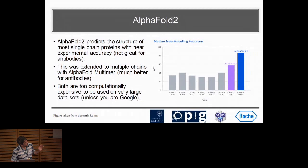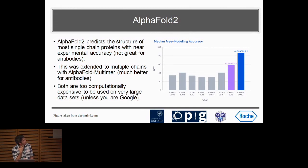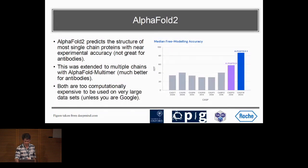The problem with both of these methods is that they are quite computationally intensive. In the case of antibodies we want to be generating structures for millions of sequences. A run of AlphaFold-Multimer takes around half an hour if you've got a GPU, and unless you have millions of GPU-hours, it starts getting not doable.